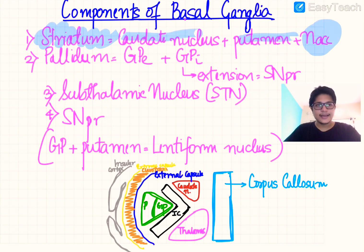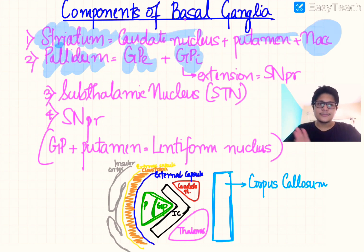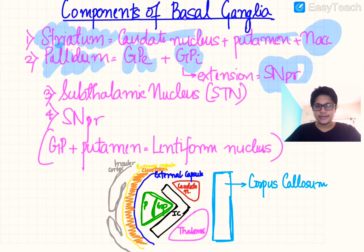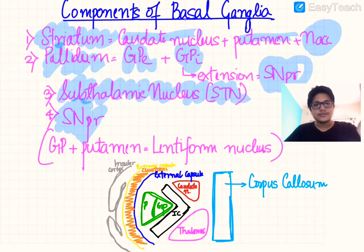the nucleus accumbens (NACC). Then there is the pallidum, which has two components: the globus pallidus externus and the globus pallidus internus. An extension of the globus pallidus internus goes into the midbrain and is known as the SNpr, or substantia nigra pars reticulata. Then there is the subthalamic nucleus, and finally the SNpc, that is substantia nigra pars compacta.